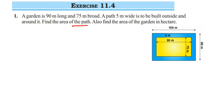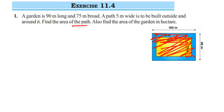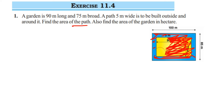From the whole area we will subtract the area of the garden. Once you subtract the area of the garden, we will get the blue color portion — that is the area of the path. So this is the first step.